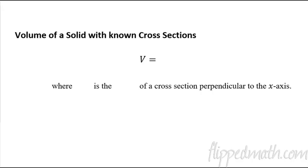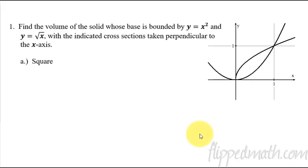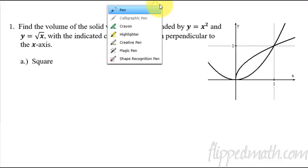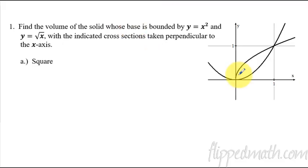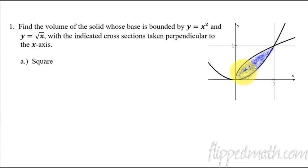We're going to start off by skipping down to the first example problem, because I want to talk about what we're trying to do today. This says to find the volume of a solid whose base is bounded by two graphs: x squared and the square root of x. Very lightly shade that area in. This is the base of an object — we'd be looking at it as if we were flying above it, like a bird's eye view, looking straight down on top of it.